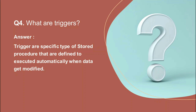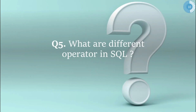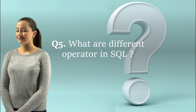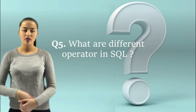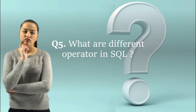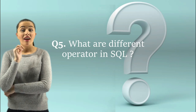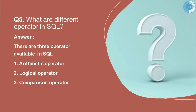The fifth question is: what are the different operators in SQL? There are basically three types of operators: arithmetic operators, logical operators, and comparison operators. Arithmetic operators include plus, minus, and multiply.